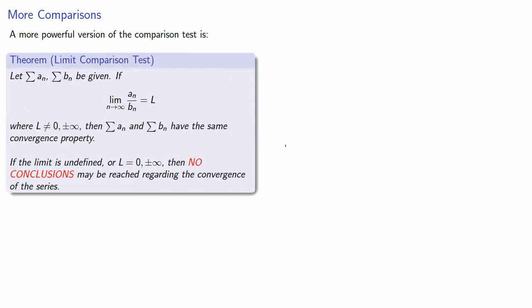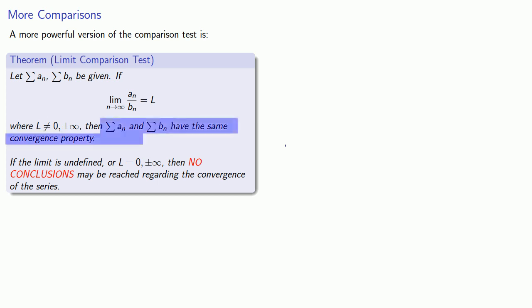The problem with the comparison test is finding a suitable series to compare to. A more powerful version is known as the limit comparison test. Suppose I have two series where the limit as n goes to infinity of the ratio of the terms, a_n over b_n, equals L, where L is not 0 and not plus or minus infinity. If that ratio is not 0 or plus or minus infinity, then the two series have the same convergence property — they either both converge or both diverge.